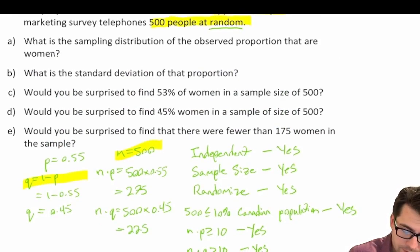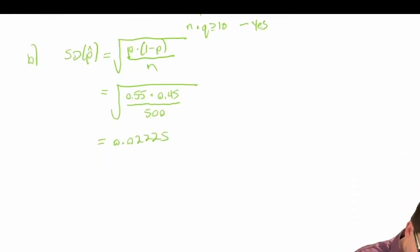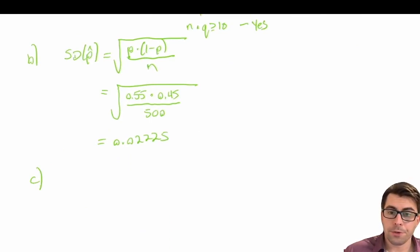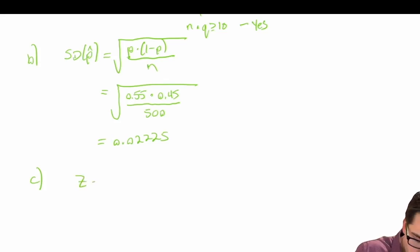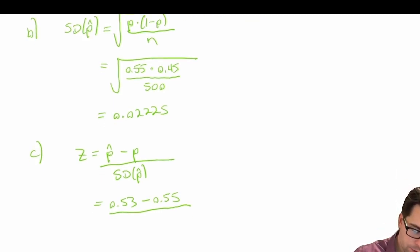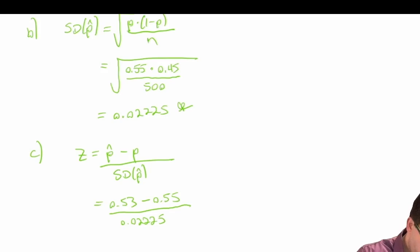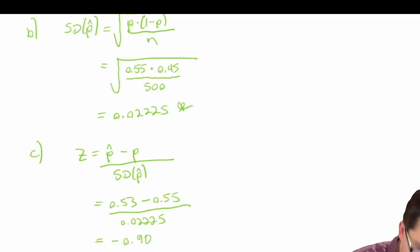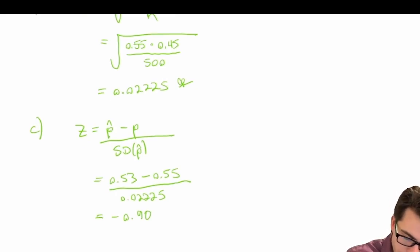Part (c): Would we be surprised to find 53% women in a sample size of 500? We know we can assume a normal distribution. So let's calculate a z-score. Z is equal to p-hat minus p divided by the standard deviation of the proportion: 0.53 minus 0.55 divided by 0.0222, which gives us a z-score of negative 0.90.